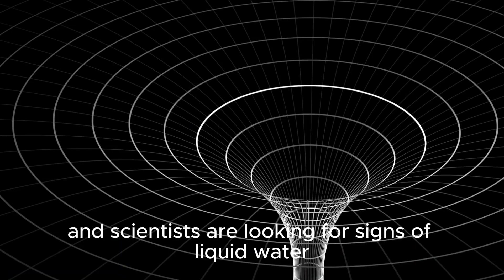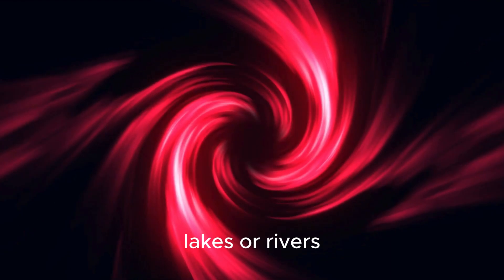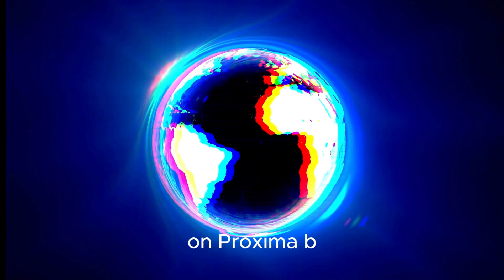Water is a critical piece of the puzzle, and scientists are looking for signs of liquid water on the planet's surface, whether in the form of oceans, lakes, or rivers. These clues could be key to assessing the possibility of habitability on Proxima b.